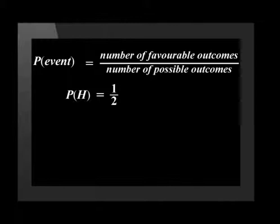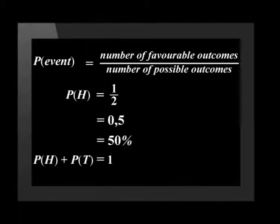We can also write this as 0.5 or as 50%. Remember, the sum of probabilities of the possible outcomes is always 1. So the probability of getting heads plus the probability of getting tails is 1.